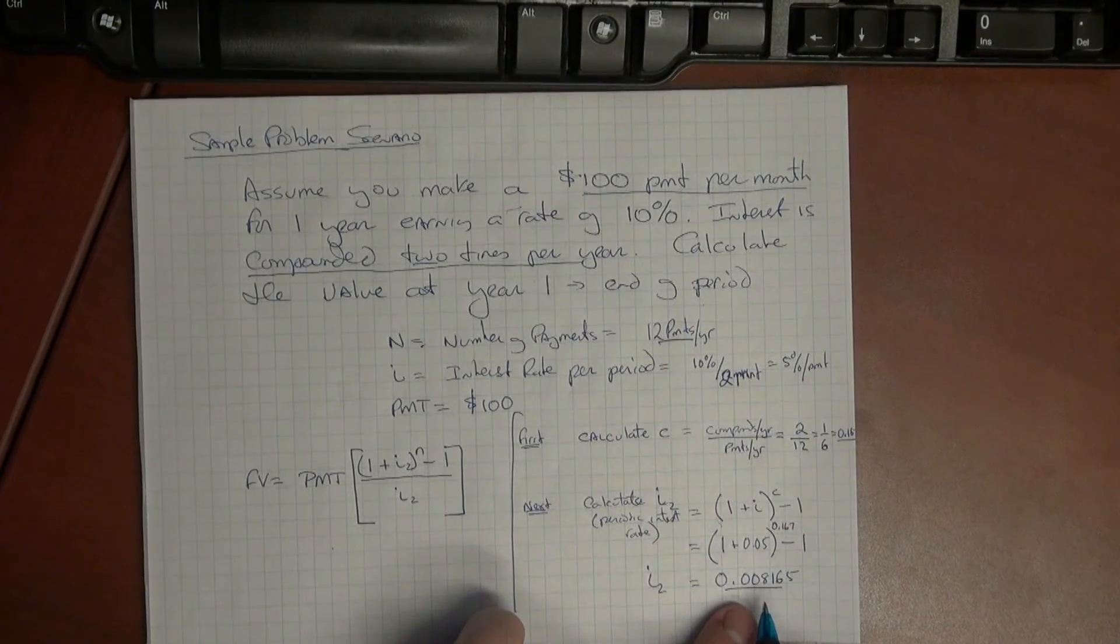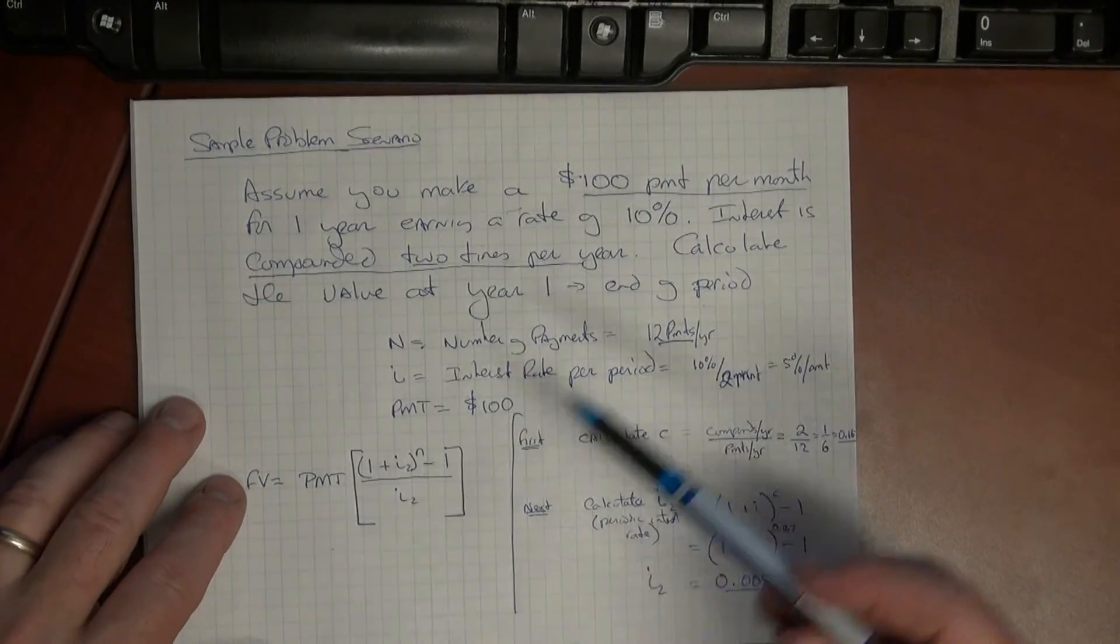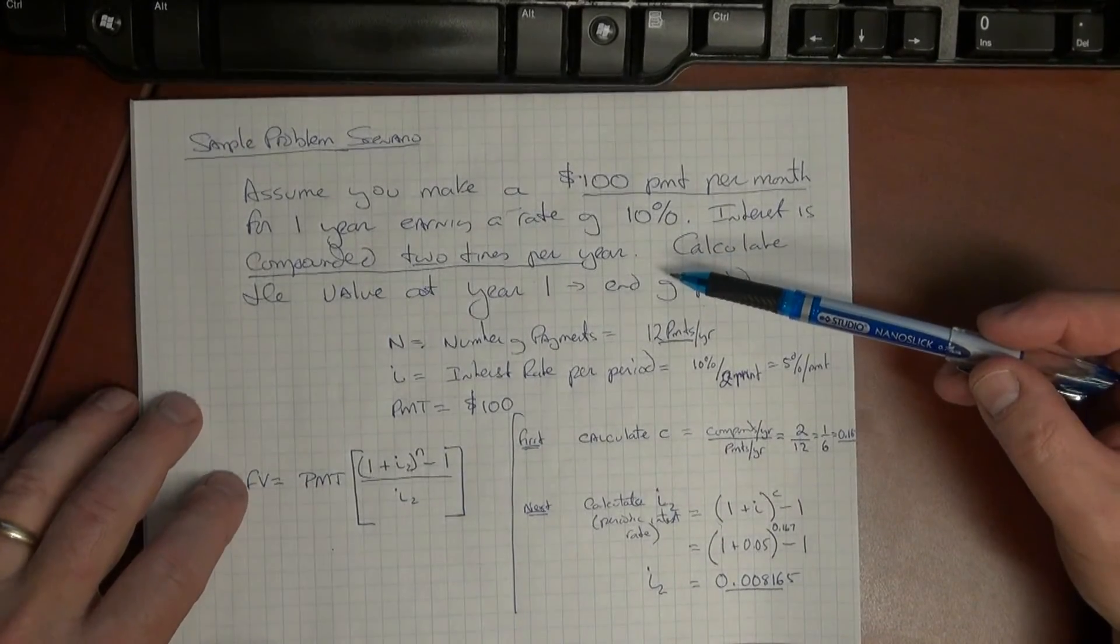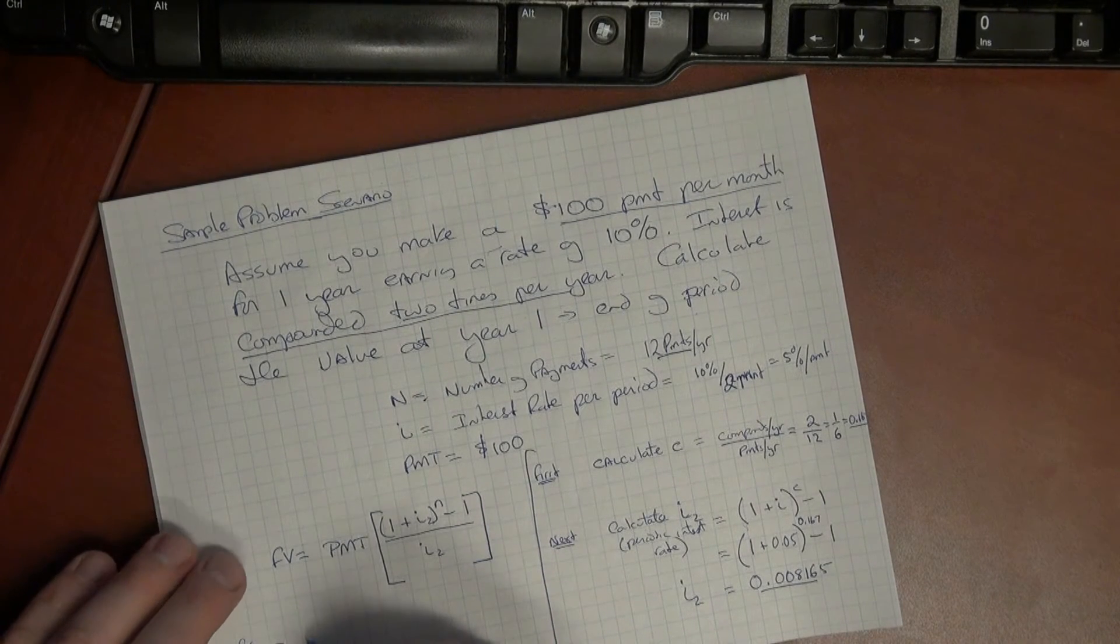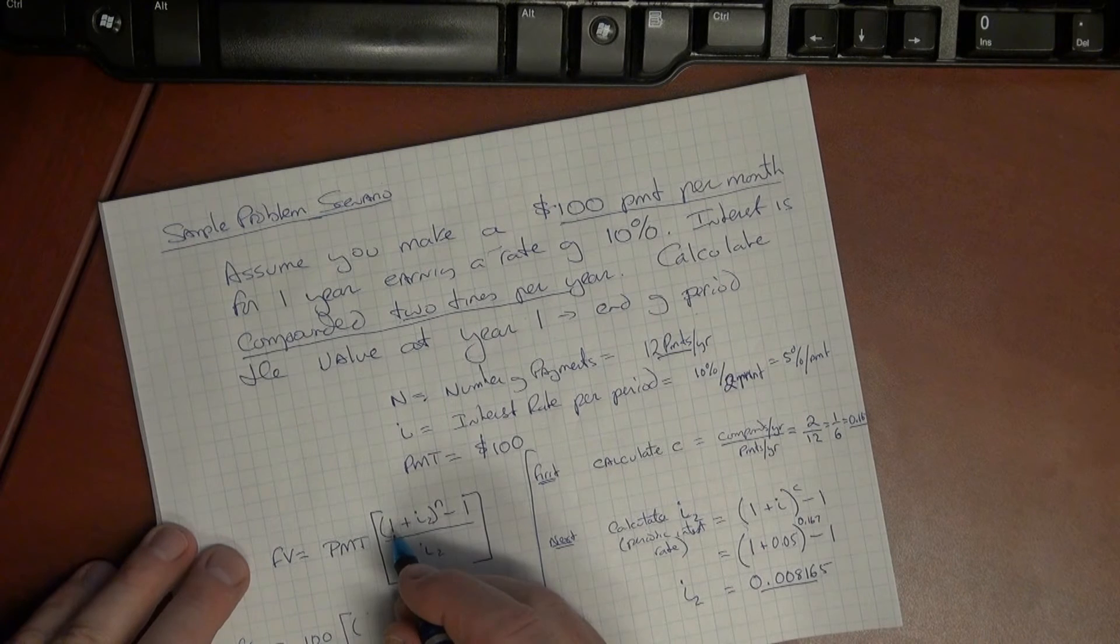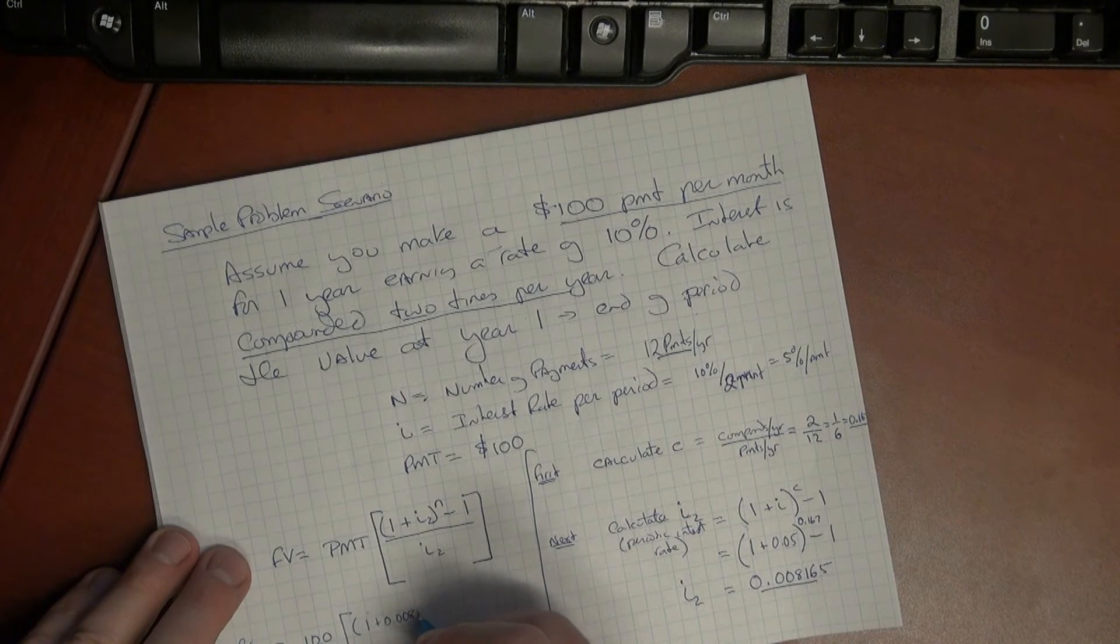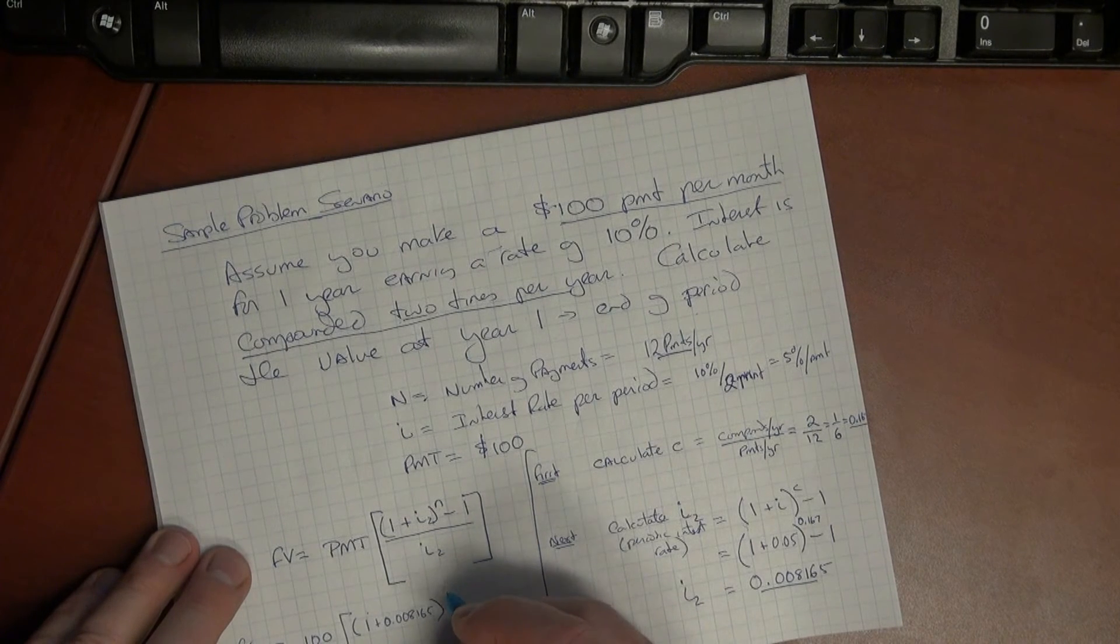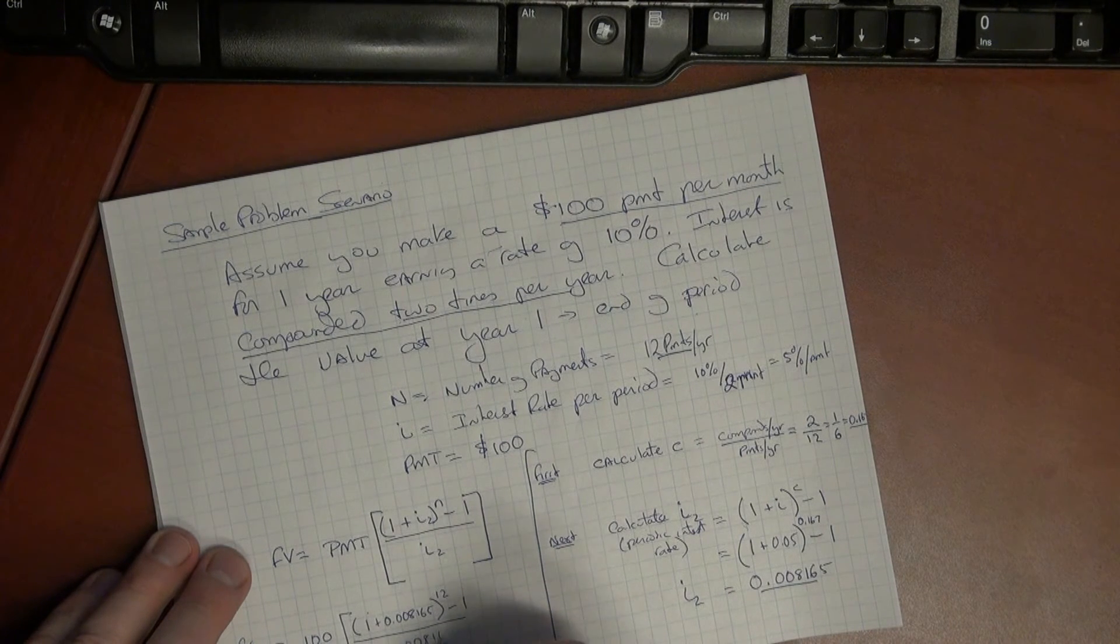What we're going to do then is we're going to use that i2 in our future value formula. And this is future value because we want to know how much it is worth at the end of the period. So essentially what we're doing is the future value equals payment which is 100. I will grant the math can get cumbersome here, it's better to use a calculator to do this: 100 times (1 + 0.008165) to the n, and we've calculated n to be 12, minus 1, over 0.008165.